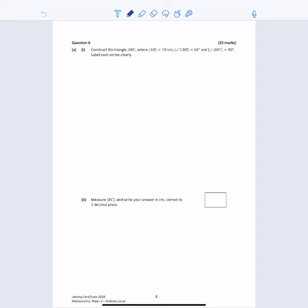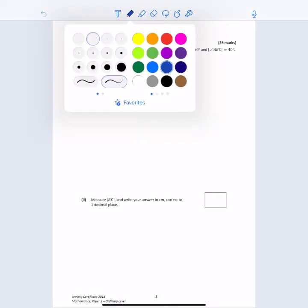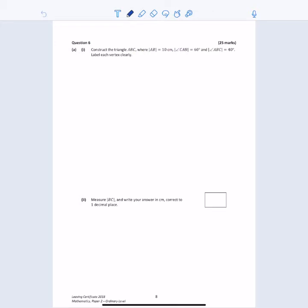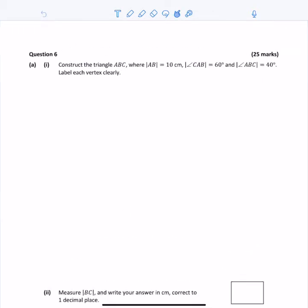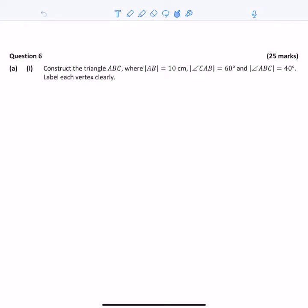Hi, in this video we're taking a look at 2018 Maths Ordinary Level Paper 2, Question 6. It's a geometry question. Let's get right into it. The first part asks us to construct triangle ABC where |AB| = 10 cm, angle CAB = 60°, and angle ABC = 40°.